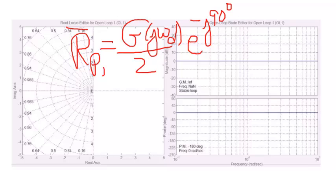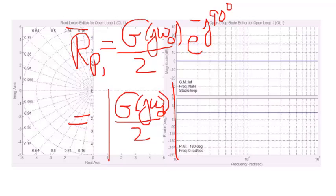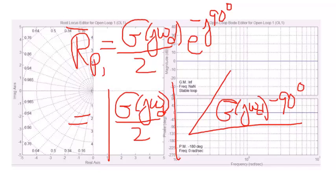And of course, this is going to be equal to a magnitude of g of j omega over 2, and the angle will be the angle of g of j omega minus 90 degrees. So we'll have a magnitude and an angle, as shown, for the residue.